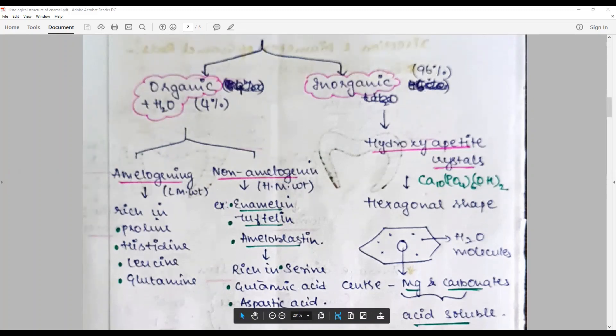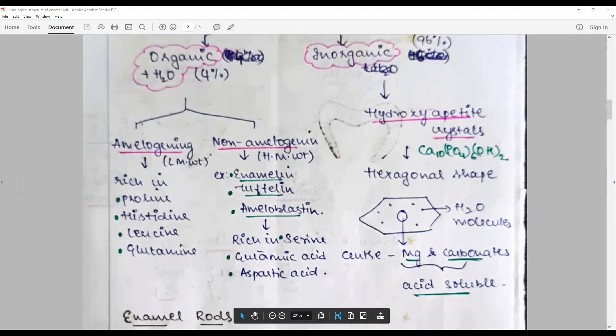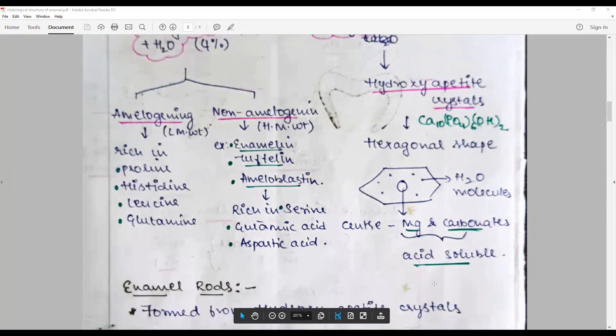Inorganic, 96 percent is mostly seen as hydroxyapatite crystals with a formula. They are often hexagonal in shape with the water molecules near the center. Periphery and center is occupied by calcium, magnesium, carbonates and all these are acid soluble.